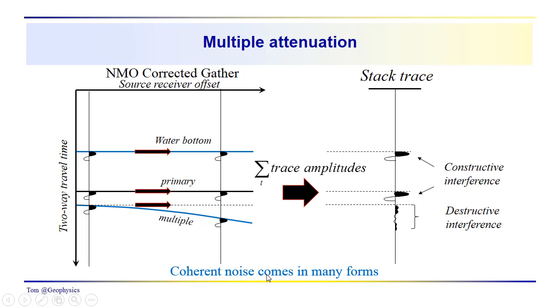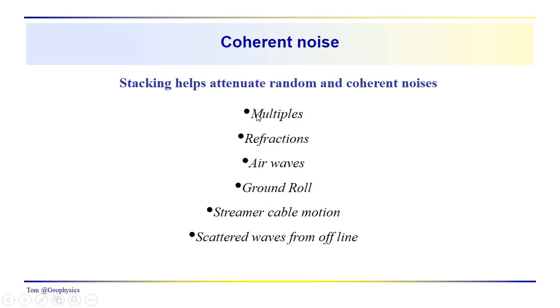So coherent noise is a problem, and it comes in a lot of different forms, and we talked about the multiples. We've talked about refractions earlier on. These are linear events, which because they're non-hyperbolic, they also are eliminated by stack. Airwaves are linear events in the gather. Ground roll is a linear event. It stacks out very nicely. Streamer cable motion is another feature which can be linear. We get scattered offline waves, which are also attenuated by stack.